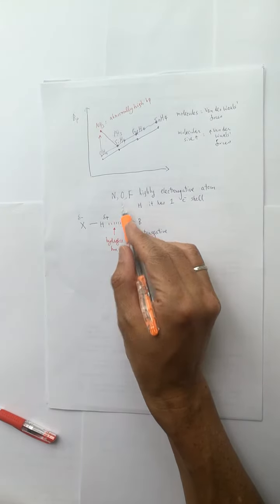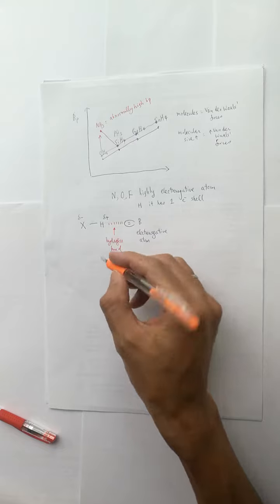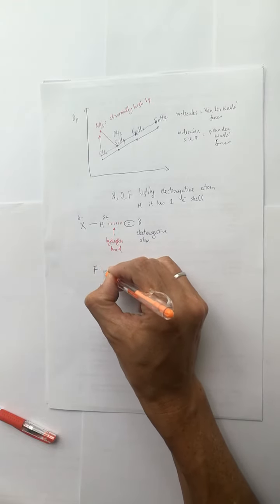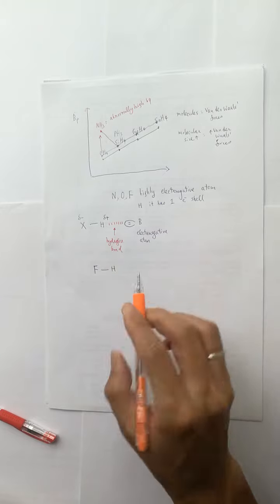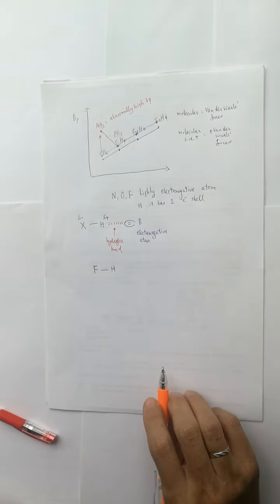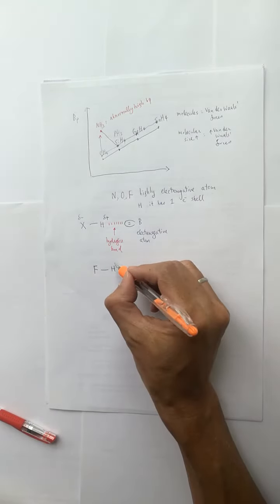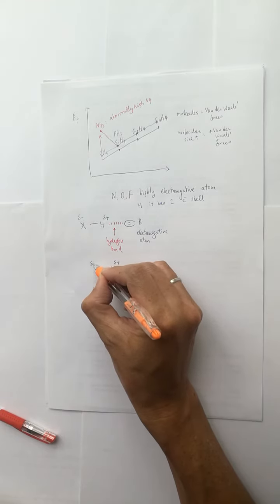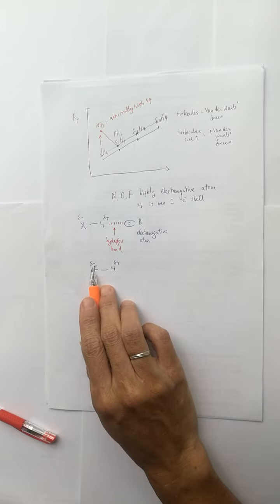If the highly electronegative atom is fluorine, it bonds to the HF molecule. The H carries partial positive and the electronegative atom F carries partial negative.